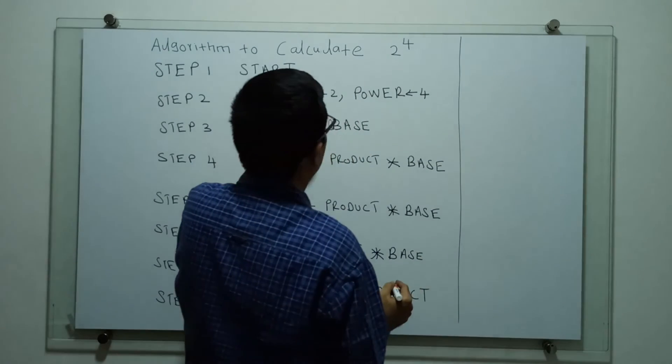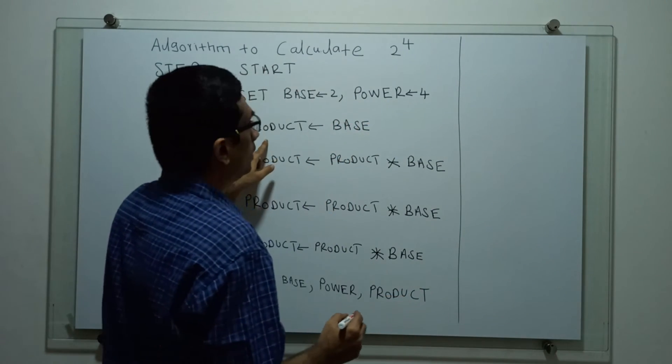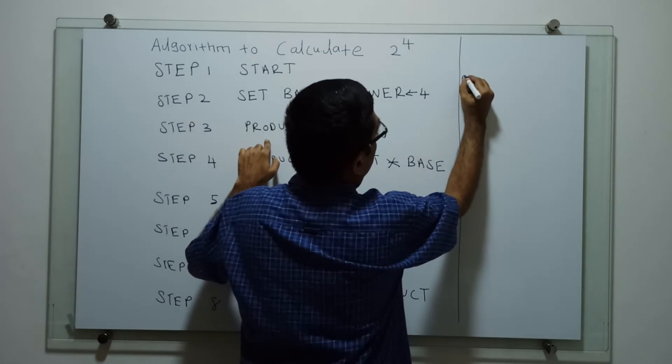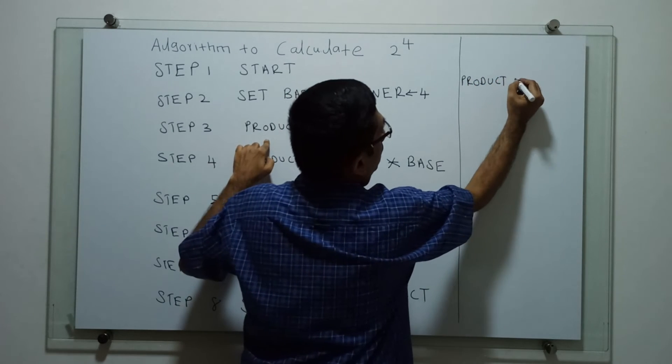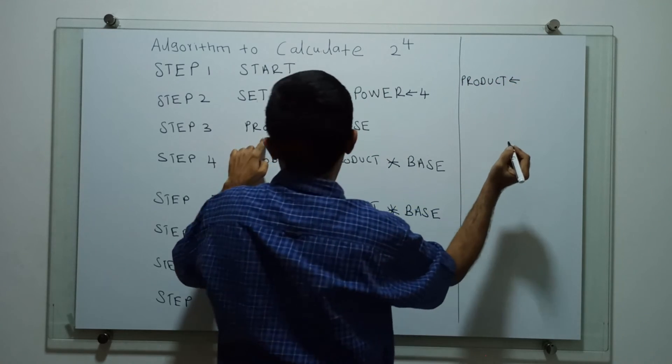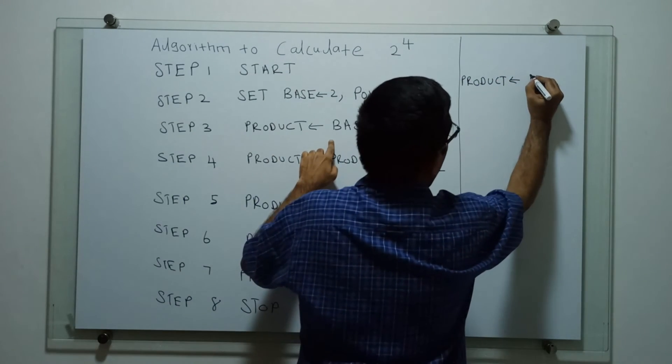So initially base equal to 2, power equal to 4. So here the product equal to base, so product value is 2.